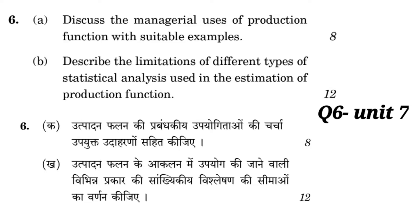Sixth question ke dho parts hain. Part one: Discuss the managerial uses of production function with suitable examples. Udpadan phalan ki prabandhkiye upyogitaon ki charcha upyukt udaharanon sahit kijiye. Yeh question hai Unit number 7 se. Pura topic milega uske andar — Managerial Uses of Production Function. Isi ke saath hi, isi chapter ka part hai: Limitations of different types of statistical analysis used in the estimation of production function. Yeh jo topic tha — Managerial Uses of Production Function — isi ke just upar yeh Limitations wala topic given hai. Wahaan se aap dekh sakti hain.